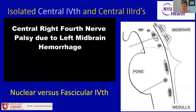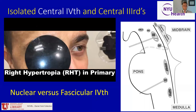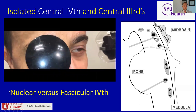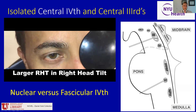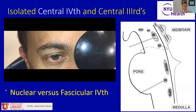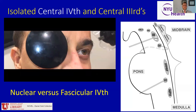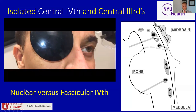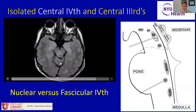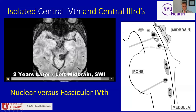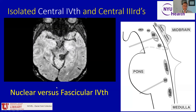Let's look at a video of an isolated fourth cranial nerve palsy — this patient had a left midbrain hemorrhage. On the cover-uncover test, we can see that the eyes realign when asked to focus on target: the right eye shifts down and the left eye shifts up, consistent with a right hypertropia. That increases in right head tilt and decreases in left head tilt. The lesion on the left midbrain localizes to that constellation of findings. This SWI MRI sequence helps us visualize blood — this dark area is consistent with the hemorrhage in the left midbrain.